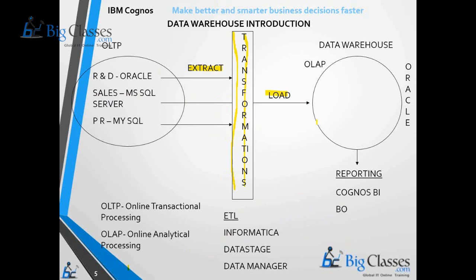After applying transformations, load the data into the data warehouse. Records are maintained as: January 1st, account number 101, total deposits, total withdrawals. Don't update or delete — just insert new records each day. January 2nd, insert one more; January 3rd, insert one more — like this, we maintain history in the data warehouse.